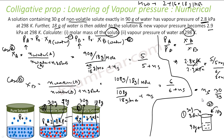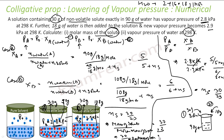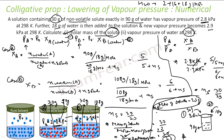NS is moles of solute = 30/23. Since mass of solute = 30 gram and moles = mass/molar mass: 30/molar mass = 30/23. The 30s cancel, so molar mass of solute = 23 gram per mole.